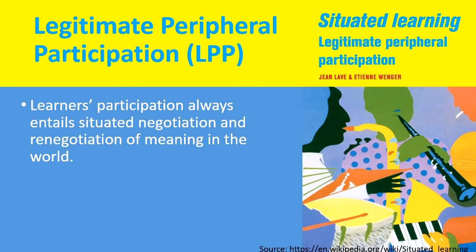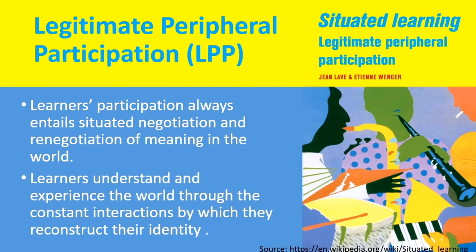With the support of others, with the encouragement and sharing of ideas from others, learners not only negotiate with the situation but also renegotiate and create new meaning. Learners understand and experience the world through constant interaction, by which they reconstruct their identities. These are very important dimensions of legitimate peripheral participation.